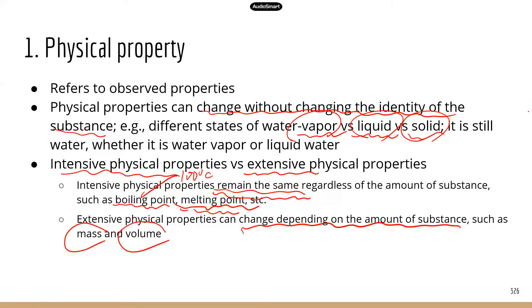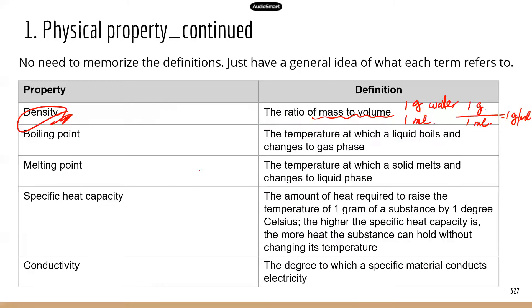Density is an intensive physical property. It doesn't matter how much substance you have, the density will remain the same. Whether you have one gram of water or 100 grams of water, the density of water will be the same.